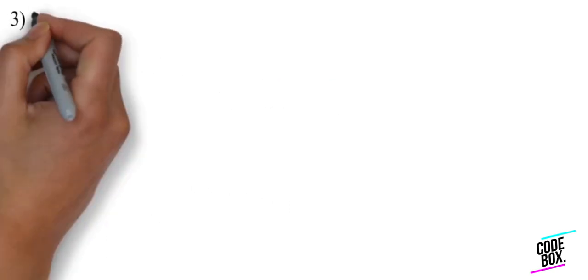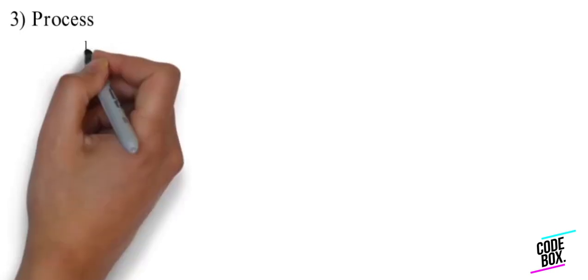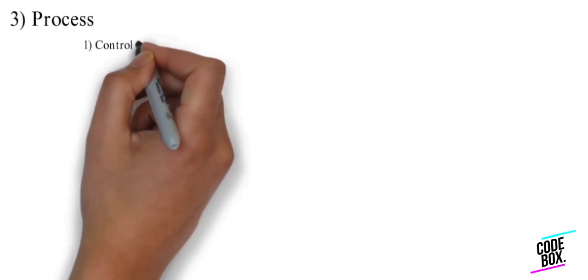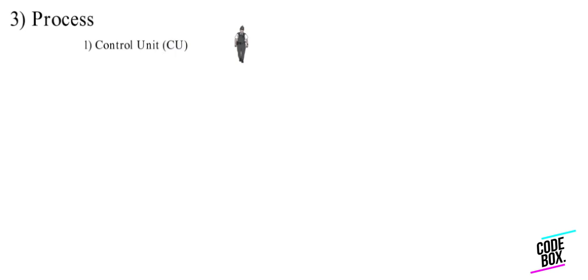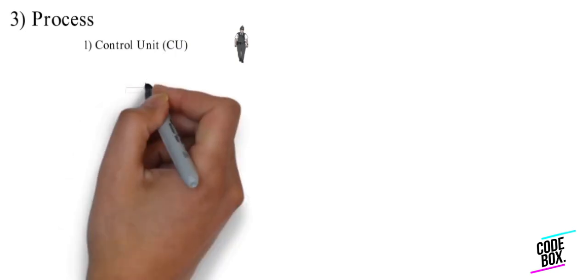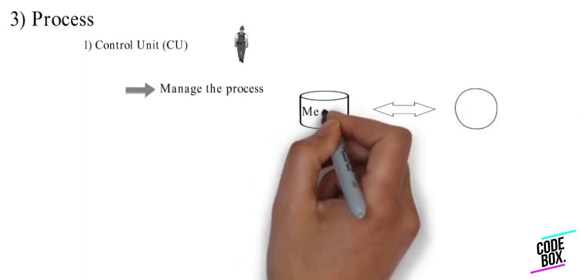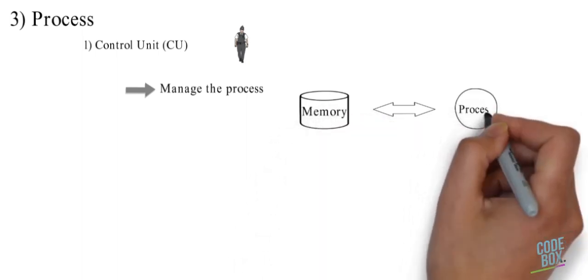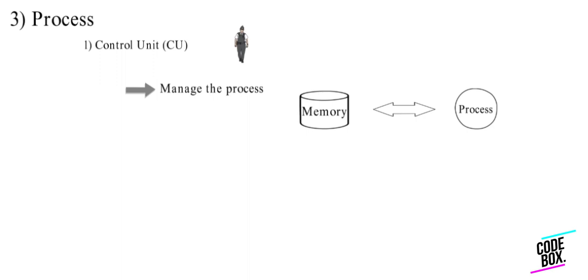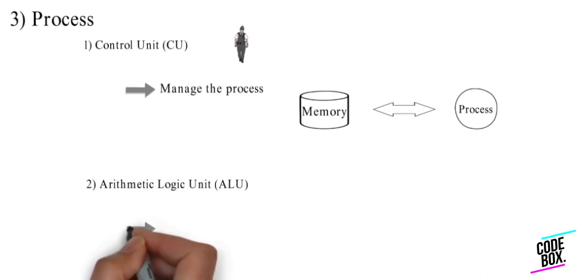The processor consists of the control unit and the arithmetic logic unit. The control unit manages the execution of instructions and main processes in memory. The arithmetic logic unit performs all mathematical functions.